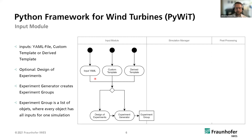Potential input variables can be, for example, wind speed, wind shear, wind seeds — all the parameters you need for a simulation of a wind turbine.